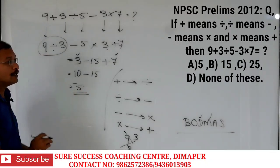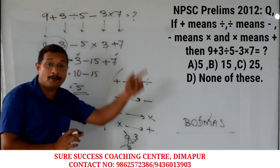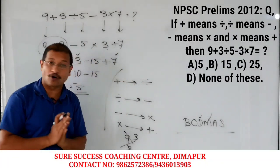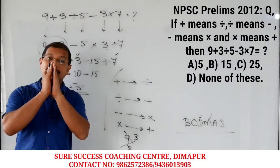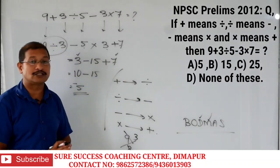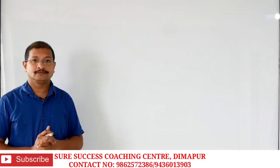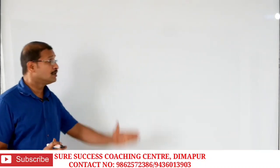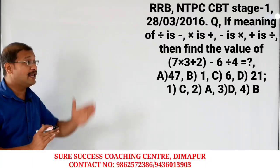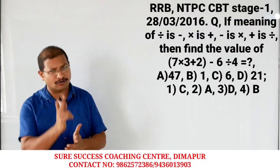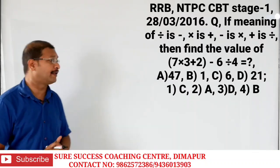Of course, if you check the options, minus 5 is not there, so the correct option is D — that is, none of these. Let's see the next question. It came in RRB NDPC 2016.